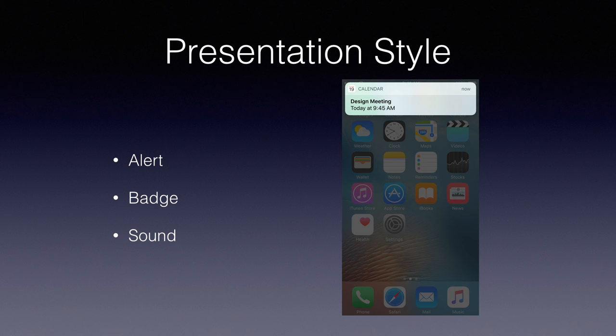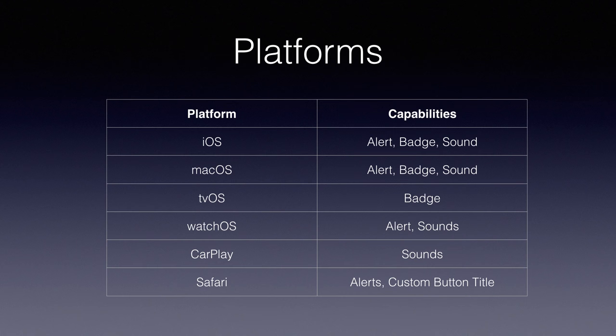I'm going to mainly talk about iOS today, but push notifications, remote notifications, and user notifications work on other platforms too. On iOS we have alert, badge, and sound. On macOS — as we now need to remember to say — alert, badge, and sound. tvOS lets you badge apps for unread or unwatched count. watchOS supports alert and sounds and even buttons. CarPlay can play sounds over playing audio. Safari also supports alerts and customized buttons.